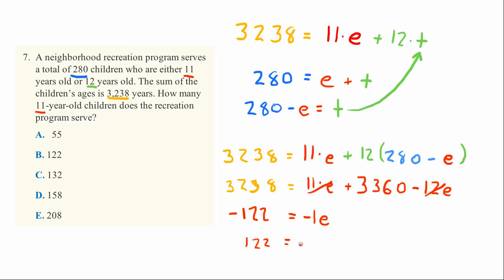122 equals E. Since E is the number of 11-year-olds, the answer is B, 122.